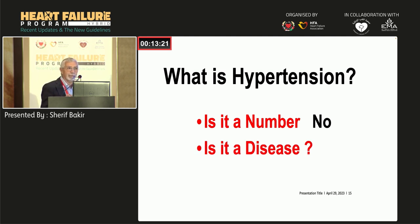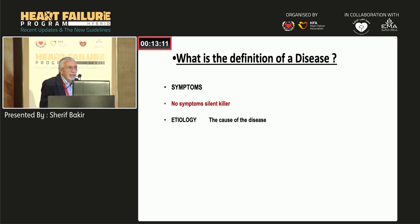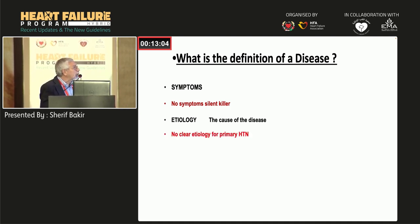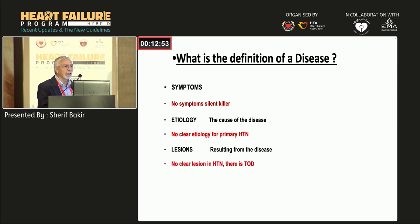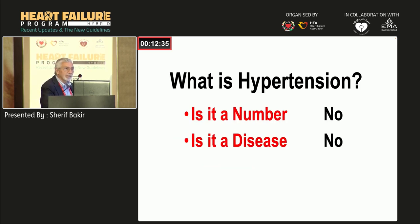The second question: is hypertension a disease? What is a disease? In hypertension there are no symptoms — it is a silent killer. There is no clear etiology for primary hypertension. There is no specific lesion resulting from hypertension — only target organ damage. Some people have kidney involvement, some the brain, some the heart. It does not fit the criteria of a disease.